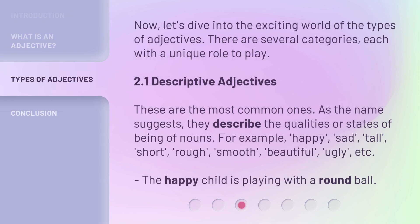Now, let's dive into the exciting world of the types of adjectives. There are several categories, each with a unique role to play. 2.1 Descriptive Adjectives. These are the most common ones. As the name suggests, they describe the qualities or states of being of nouns.